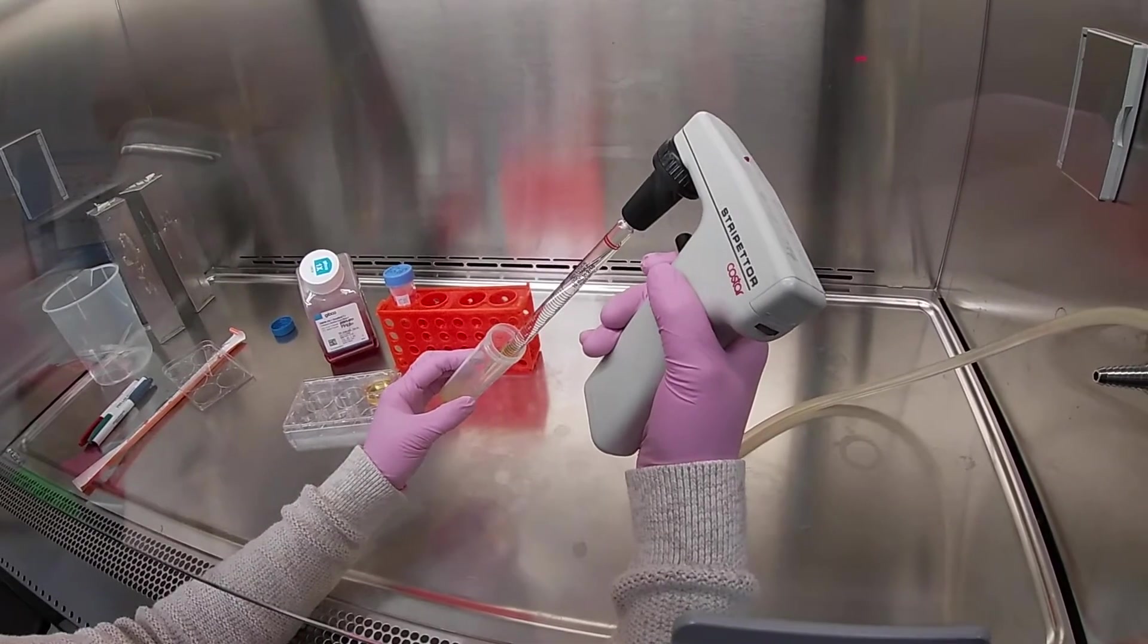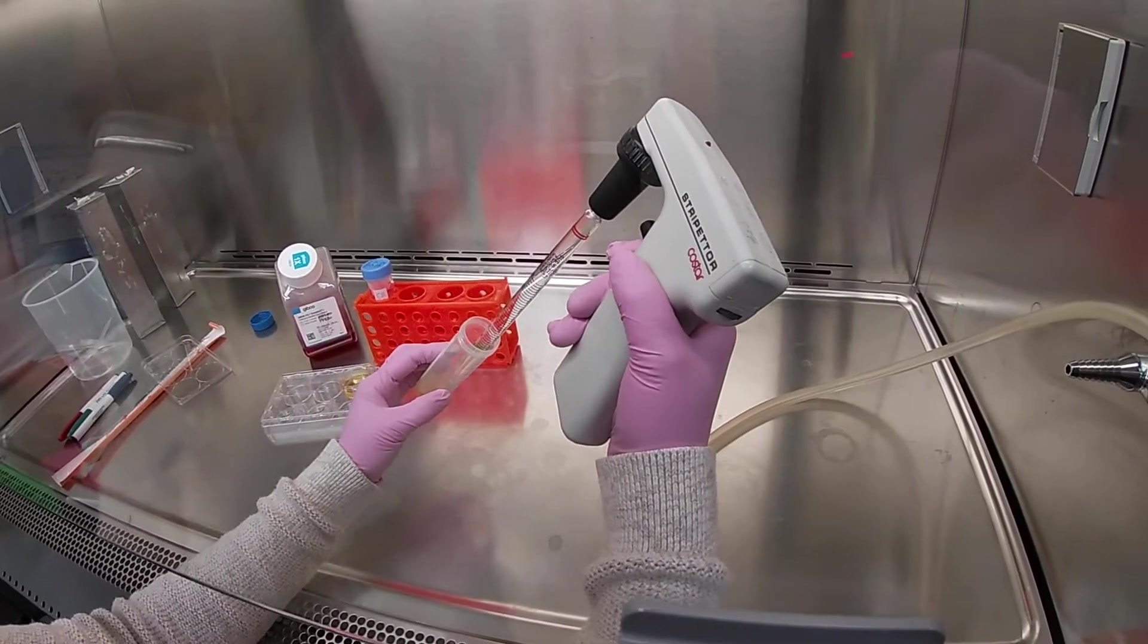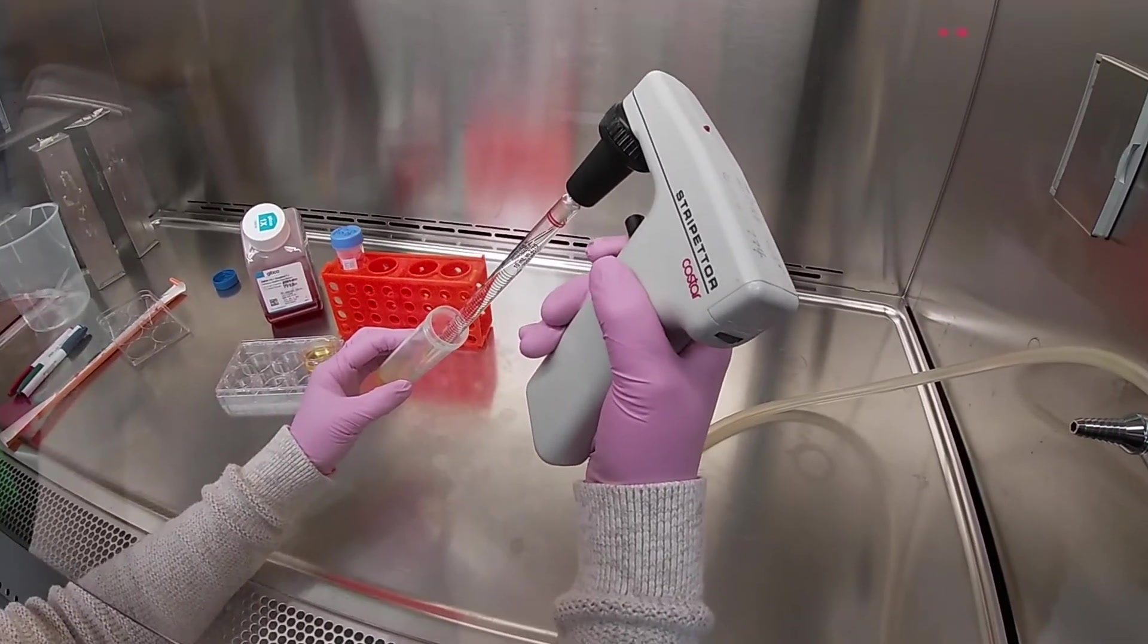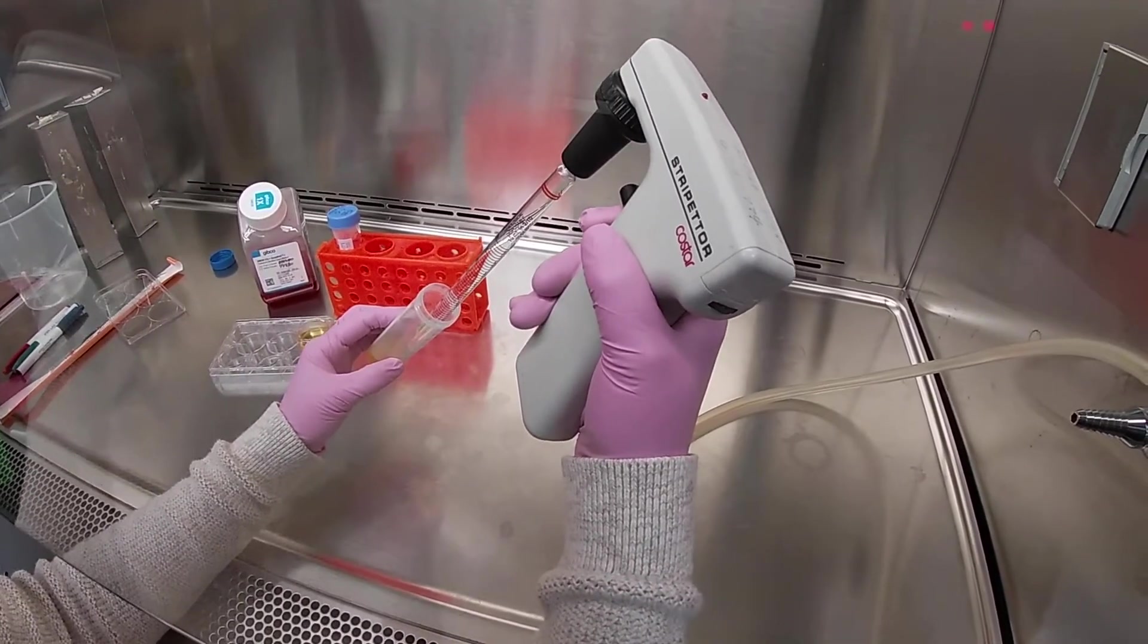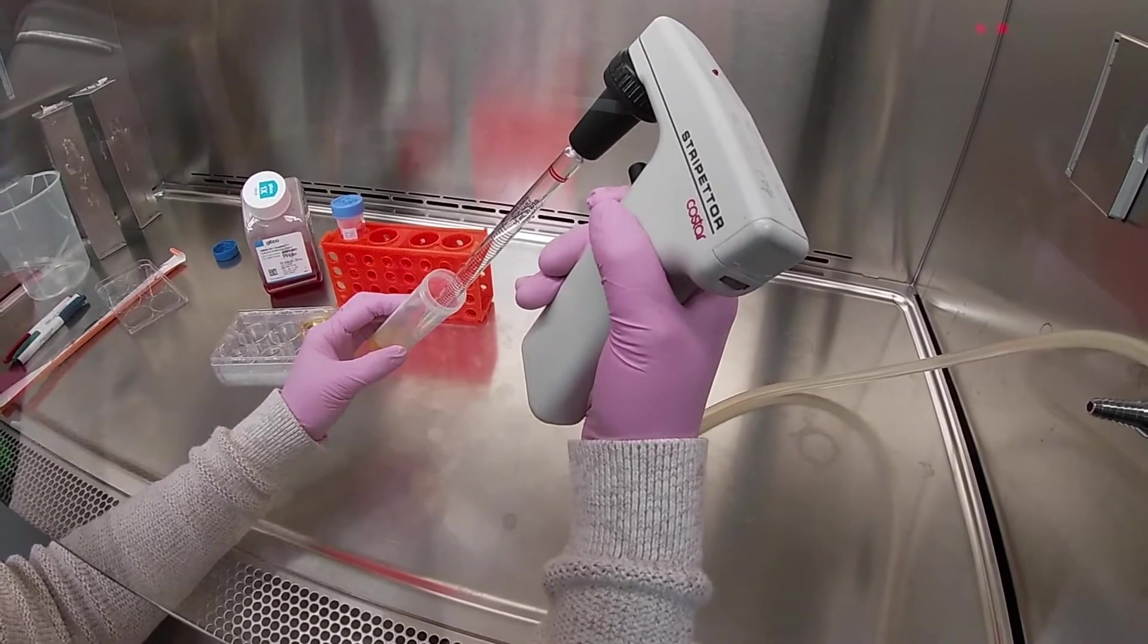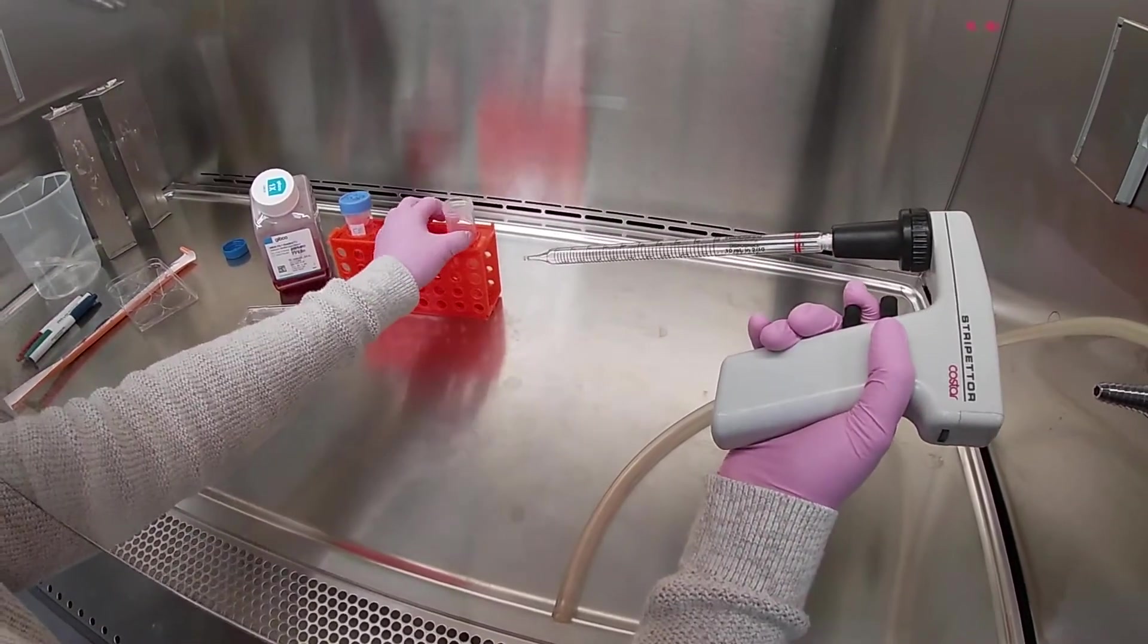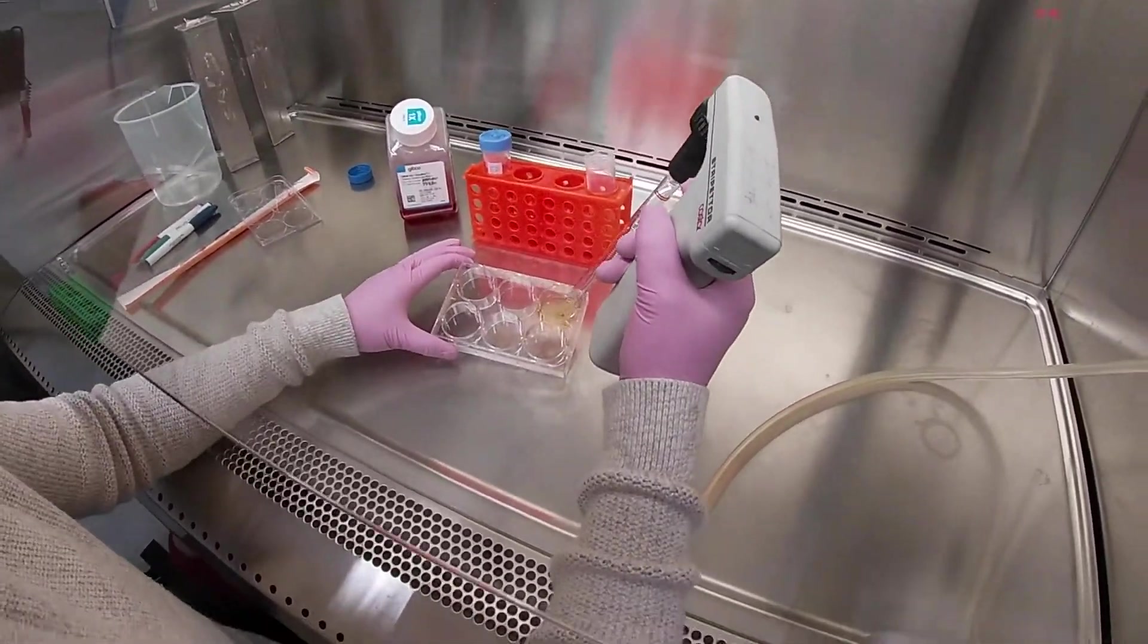Be sure that you have pre-warmed your high-glucose DMEM and your EB20 media so they're ready to use. Today, we're going to be using high-glucose DMEM to rinse our cells because high-glucose DMEM is used to make our EB20 media.